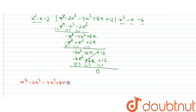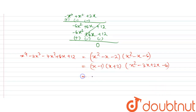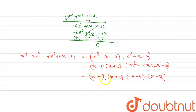So x⁴ minus 2x³ minus 7x² plus 8x plus 12 equals (x² minus x minus 2) multiplied by (x² minus x minus 6). Factorizing x² minus x minus 2 gives (x minus 1)(x plus 2), and factorizing x² minus x minus 6 gives (x minus 3)(x plus 2). Therefore the four factors are (x minus 1)(x plus 2)(x minus 3)(x plus 2).